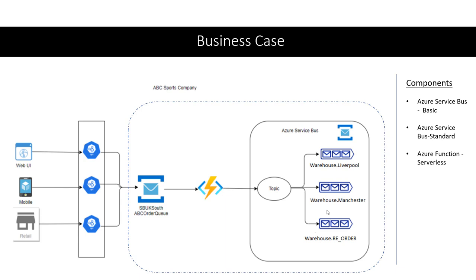There is an Azure Function that's going to process the orders from the service bus queue, identify the right warehouse which can serve that particular order, and then publish that order to a topic in another service bus. This topic is being subscribed by different subscriptions like Warehouse Liverpool, Warehouse Manchester, and Warehouse Reorder.